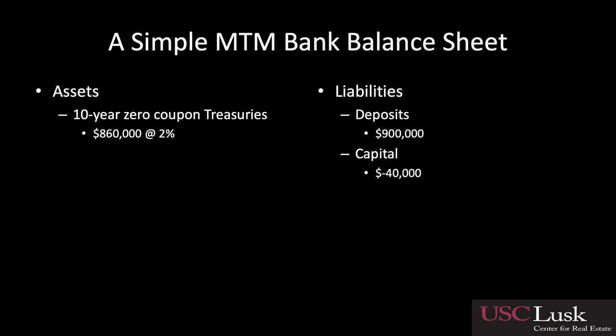On a mark-to-market balance sheet: your zero coupon treasuries are worth $860,000, but your deposits are still $900,000. You've gone from plus $100,000 to minus $40,000 in capital. Had the Fed stopped at 3.5% in terms of the short-term rate — assuming the yield curve was similar in shape to now — you wouldn't have banks underwater. That's why 3.5% is in my view where they should have stopped. They should have recognized the pressure they were putting on banks.